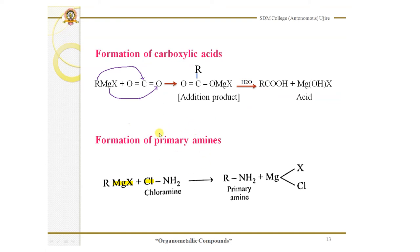You can also prepare primary amines by treating a Grignard reagent with chloramine. In general, RMgX treated with chloramine gives RNH₂, the general formula of a primary amine, as MgX combines with chlorine to form MgXCl as a byproduct. For example, if you want to prepare methylamine, you start from CH₃MgBr, treat it with chloramine, and you will get CH₃NH₂, which is methylamine.